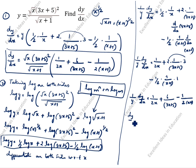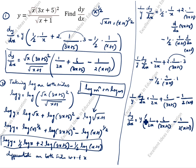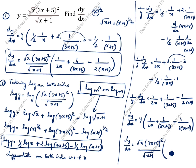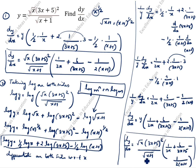dy/dx equals y times open bracket 1/(2x) plus 6/(3x+5) minus 1/(2(x+1)). Substituting the value of y: dy/dx equals root x times (3x+5) whole squared divided by root of (x+1), times open bracket 1/(2x) plus 6/(3x+5) minus 1/(2(x+1)). This is the answer — second method.